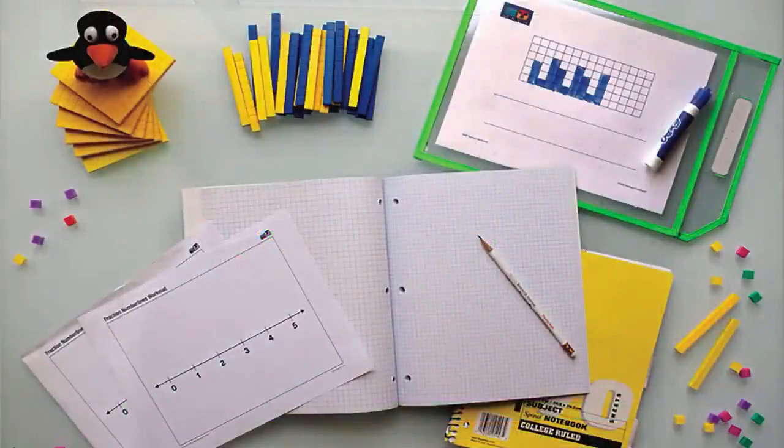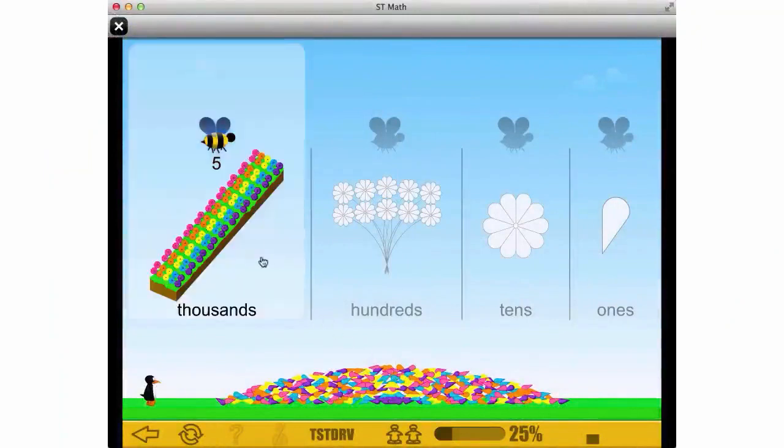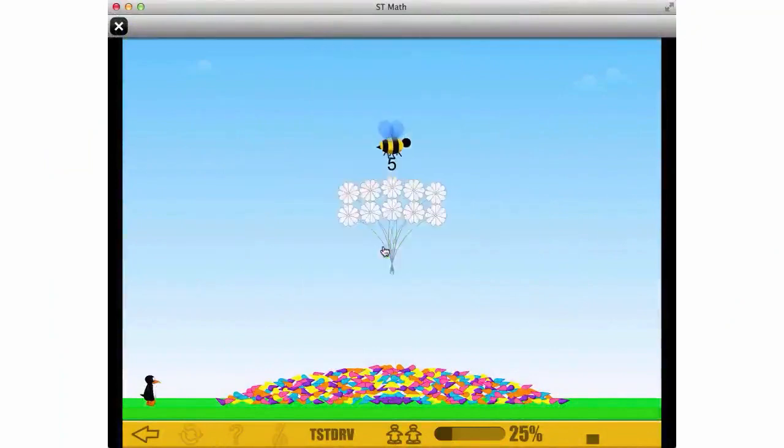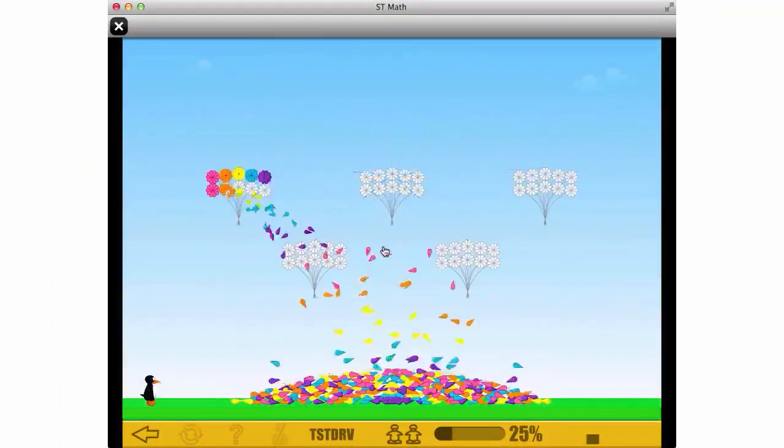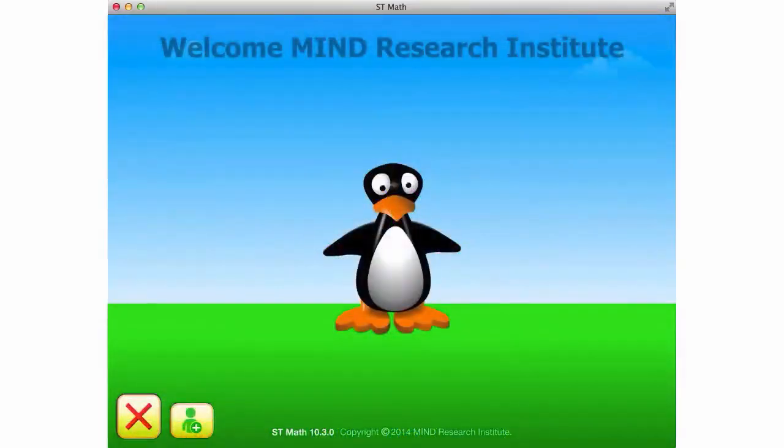You can also use things like grid paper, blocks, or whiteboards to help you figure it out. The better you visualize what you think is going to happen, and compare it to what really happens, the more you'll be able to figure out how the games work, and to learn how the math works. And that's really different than the way we usually learn math. And now it's your turn. Have fun playing ST Math!